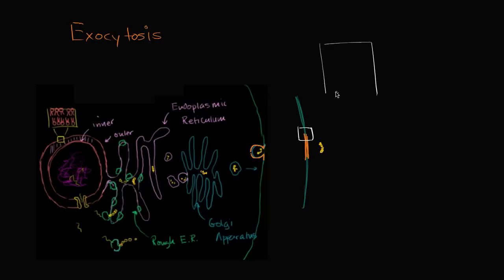So if we were to zoom in, it would look like this. It's a phospholipid bilayer. So these are some of the phospholipids that were part of the original membrane.